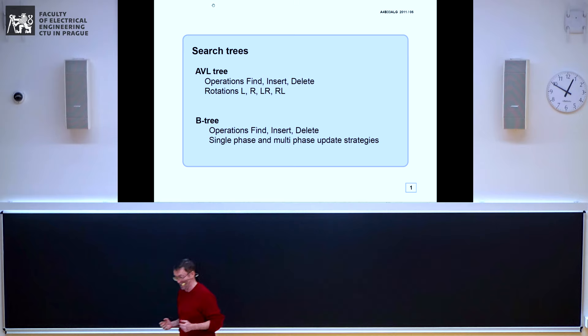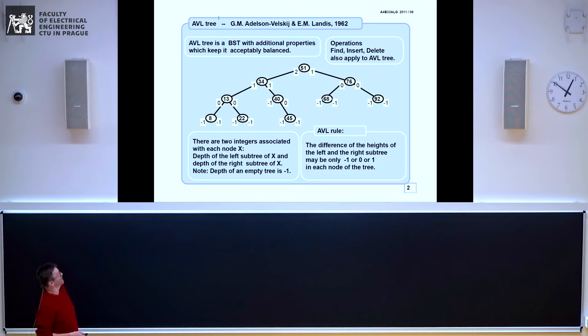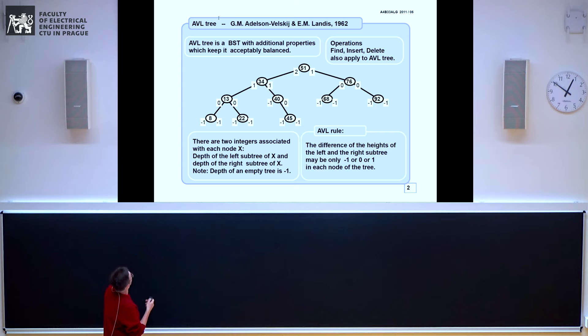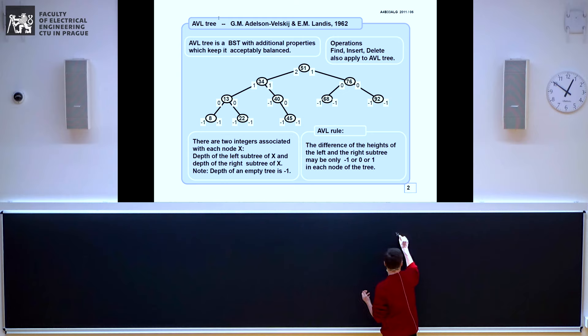Let's talk about search trees which are a little better than the trees we have seen last time. They look like a regular search tree with some keys stored in the nodes. You can search, insert, and delete anything in this tree. There are additional values associated with each node — two of them — that tell you the depth of the left and right subtree of each node. What anybody wants is to have a balanced tree.